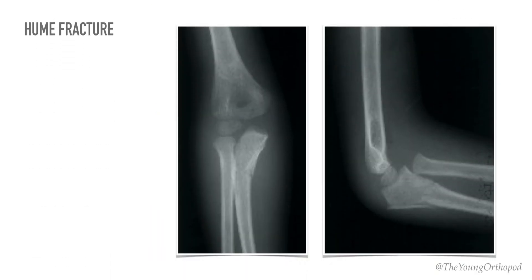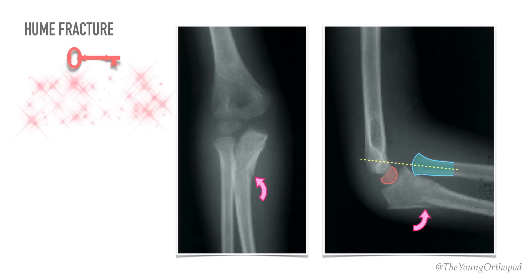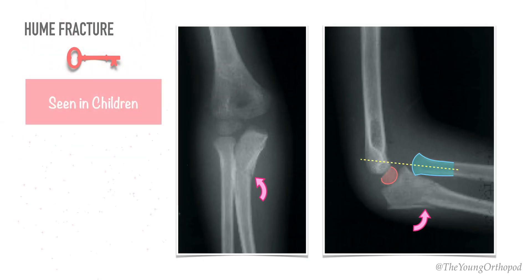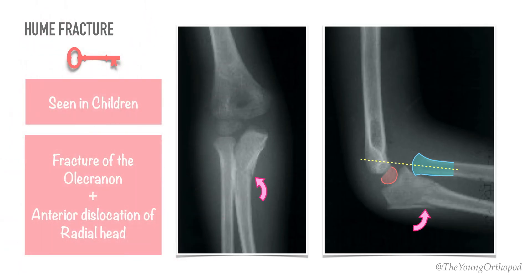The Hume fracture is an injury to the elbow comprising a fracture of the olecranon with an associated anterior dislocation of the radial head. It is a variant of the Monteggia fracture in children, named after A. C. Hume, who first described it.